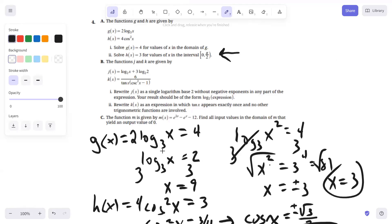Part B, we have those two functions. Part 1, we want to rewrite J as a single logarithm. We could just write this as log base two of X plus log base two of two to the third power, or eight, by the power property. And then the addition property, we would multiply those together and get log base two of eight X.